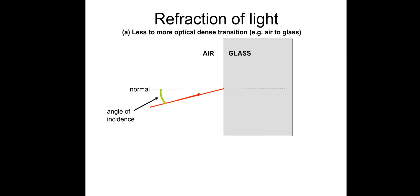So the refraction of light — as you can see this light comes in to this boundary, this air-glass boundary, and it refracts towards the normal. So less to more optically dense transition, so air to glass. When you enter a material that is more dense you will always get a refraction towards the normal.